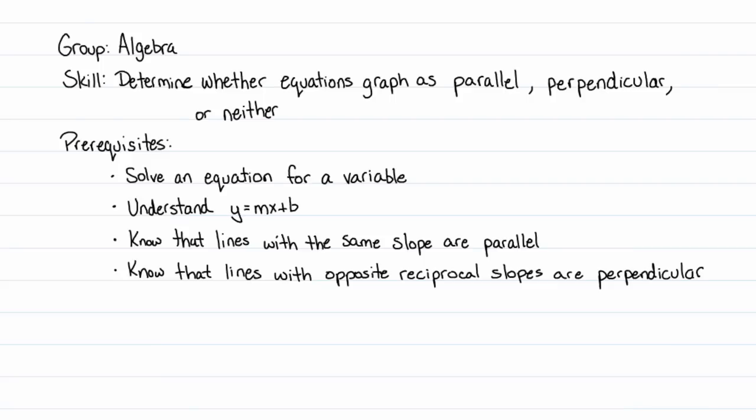The second prerequisite is to understand the slope-intercept form of a linear equation, y = mx + b. M here is known as the slope of the equation, the steepness of the equation, and b is known as the y-intercept or the vertical intercept.